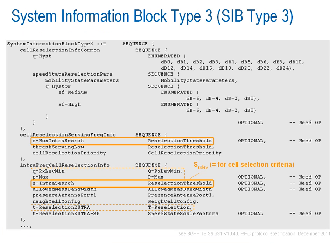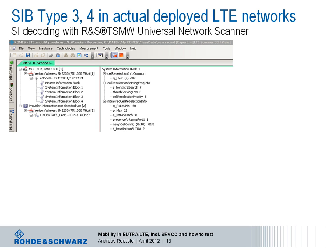Let's look at SIB type 3 as an example. Both thresholds we just discussed — non-intra-search and intra-search — are highlighted. The value for the reselection threshold is, according to TS 36.331 defining the RRC protocol in LTE, in the range of 0 to 31, multiplied by a factor of 2 and expressed in dB. In addition, this SIB includes the parameters required for calculating the selection criteria. The time available for cell reselection is specified in the T-reselection information element, and can be in the range of 0 to 7 seconds.